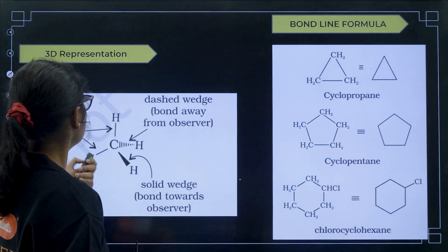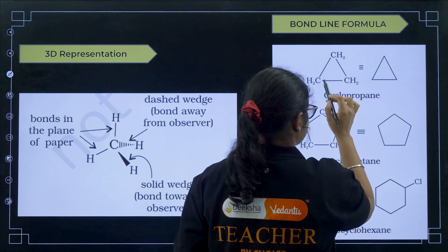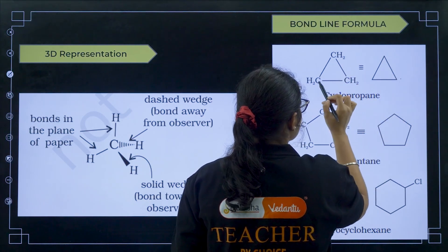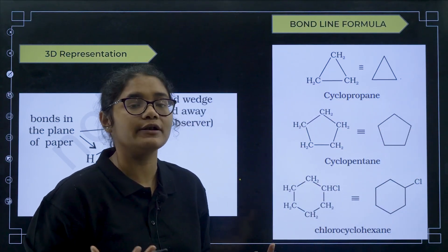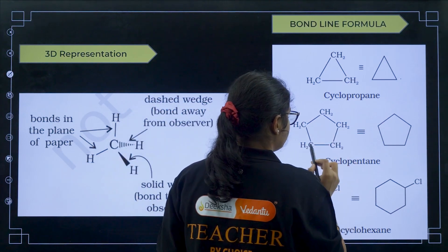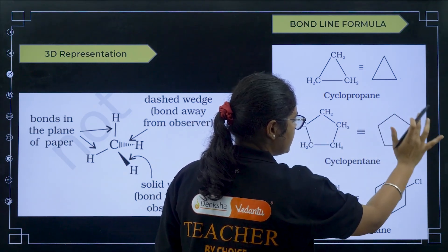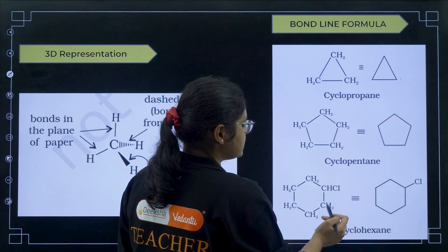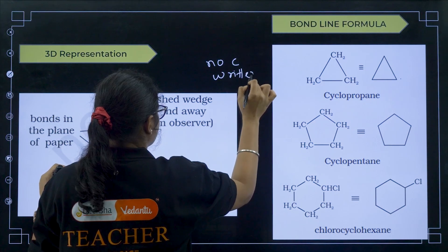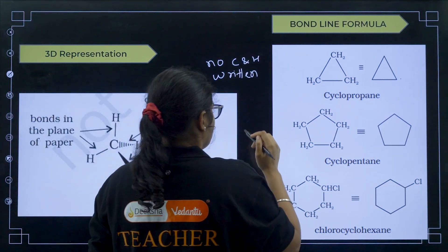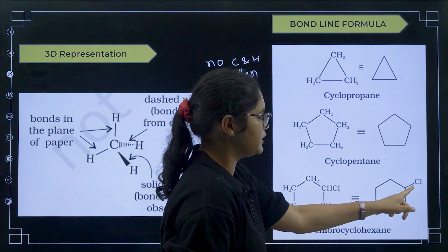Coming to bond line formula — if you are just writing the bond line, only the carbon-carbon bond is represented; hydrogens are not represented at all. These types of structures are called bond line formula. For example, carbon-carbon bonds are shown, but if you want to convert it into bond line, no element should be written. In bond line formula, carbon and hydrogen are not to be written; other elements like chlorine have to be written. So in bond line formula, if chlorine is attached to a carbon, that is still shown.